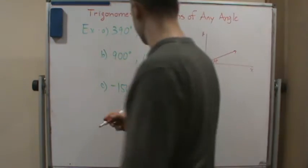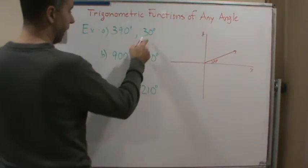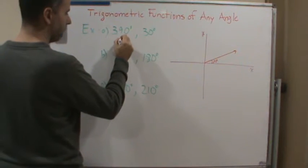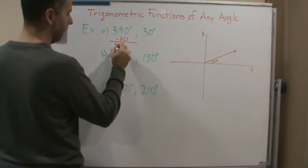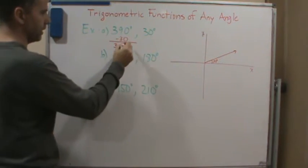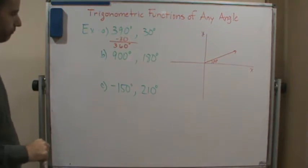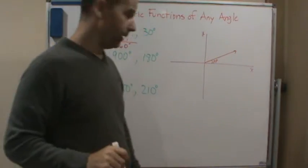So also notice that if I subtract 30, I get 360 degrees, which is one revolution. Okay, so now let's do another one.